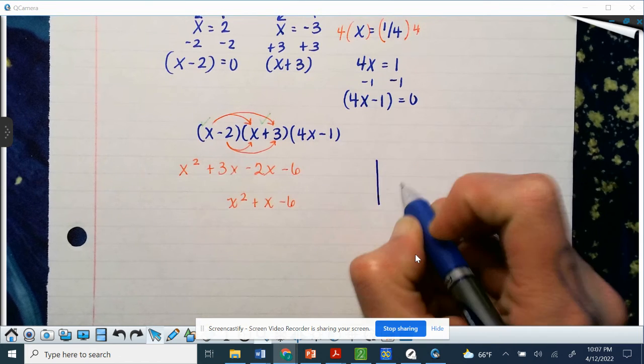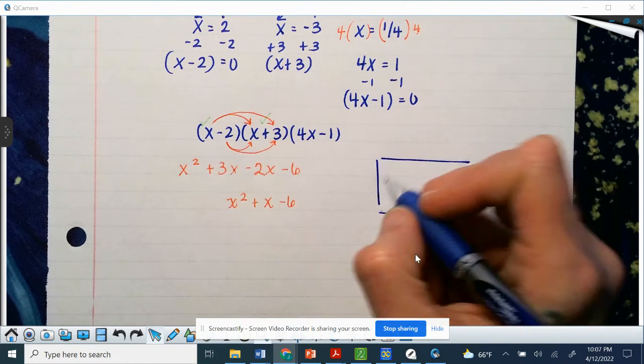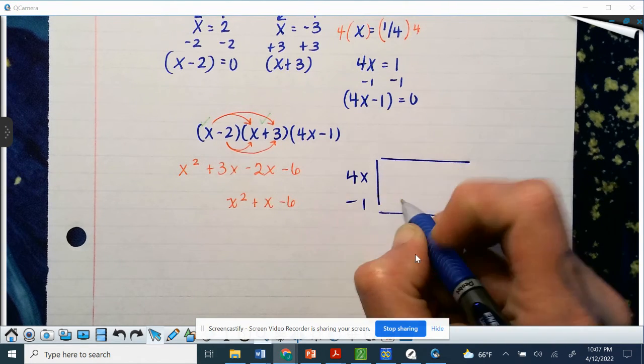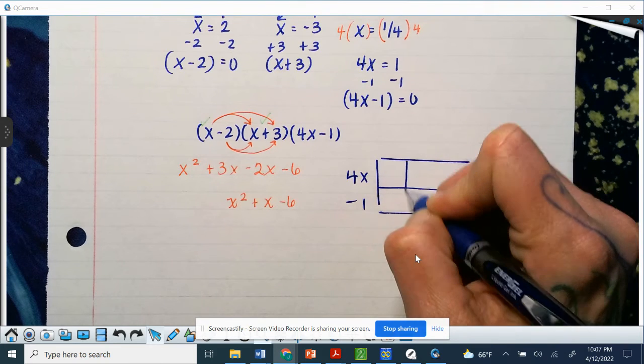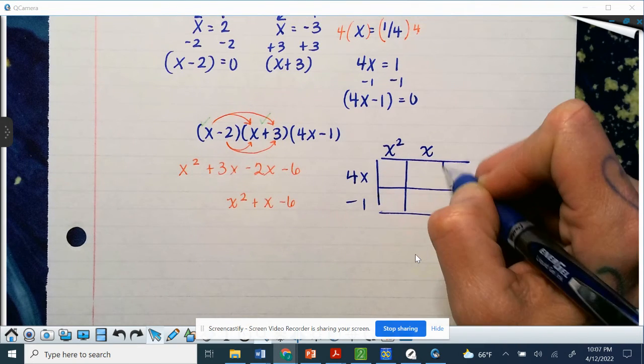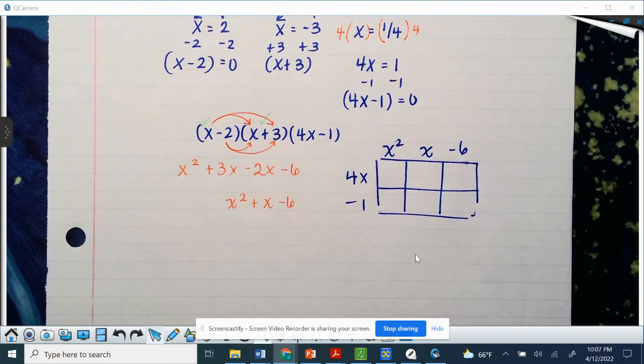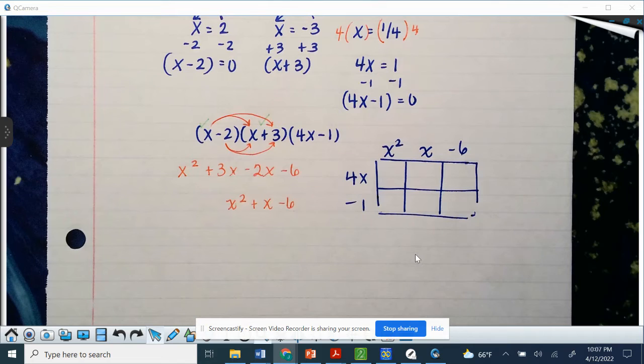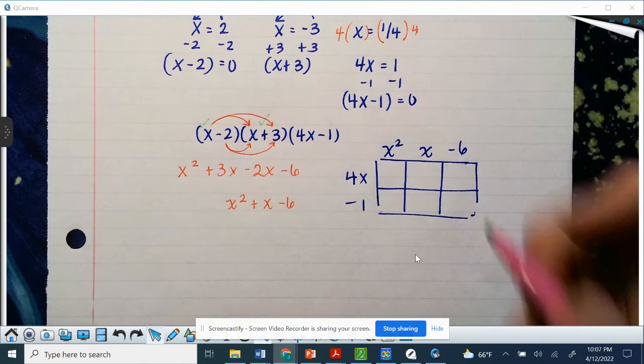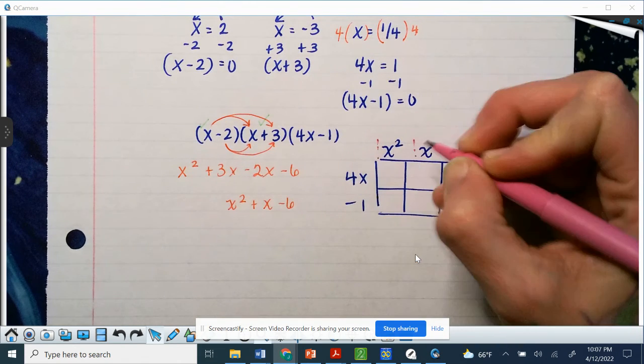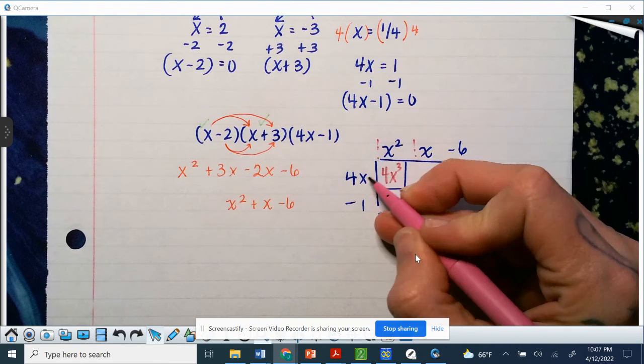This time I am going to do it by box method. So 4x minus 1, we have x squared, positive x, and then that negative 6. And so we're going to multiply that into our box.